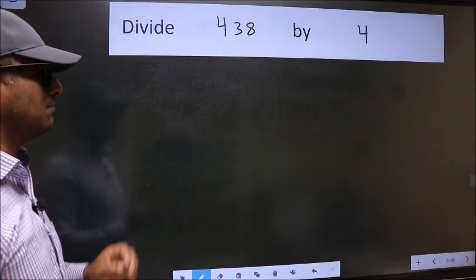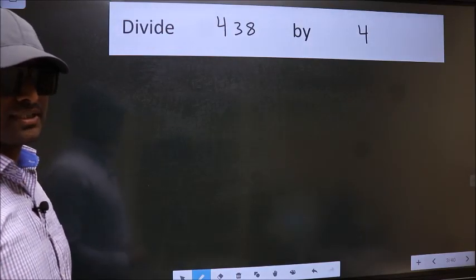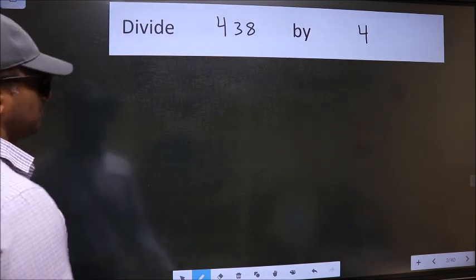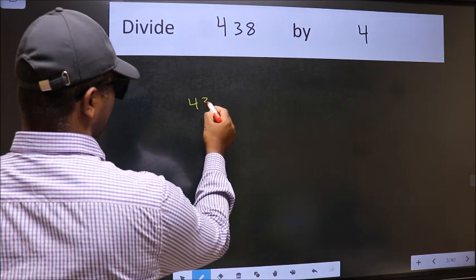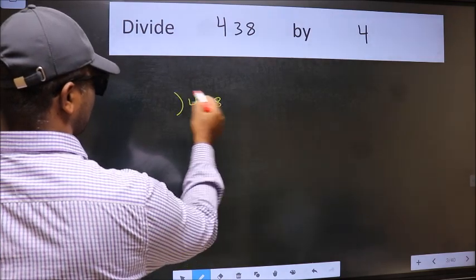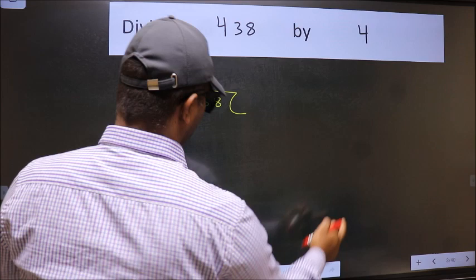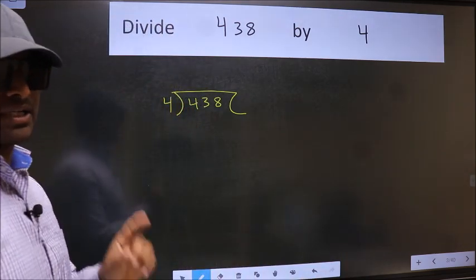Divide 438 by 4. To do this division, we should frame it in this way. 438 and 4 here. This is your step 1.